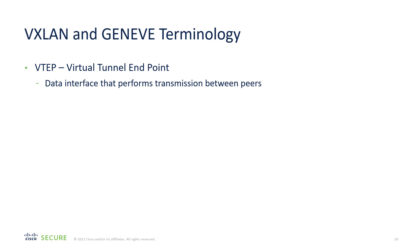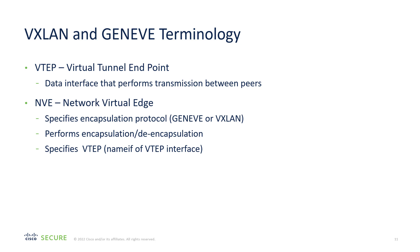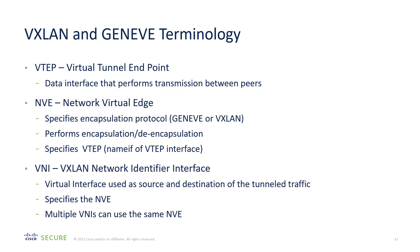Let's go over some of the technology required to understand the demonstration. The VTEP, Virtual Tunnel Endpoint, is the data interface used to communicate between peers — for example, GigabitEthernet 0/0 or 0/1. The NVE, or Network Virtual Edge, is the component of the firewall that performs encapsulation and de-encapsulation of packets, and specifies the VTEP that the packet is to be sent out or received from. The VNI is the virtual interface that you actually use as a source of the packets sent through the VXLAN or GENEVE tunnel. It specifies the NVE, and multiple VNIs can use the same NVE.